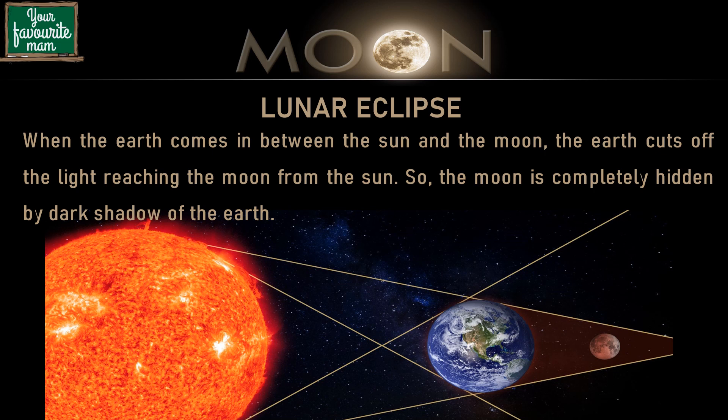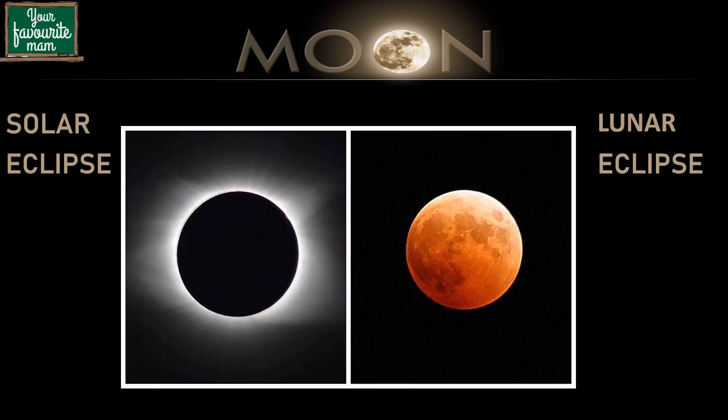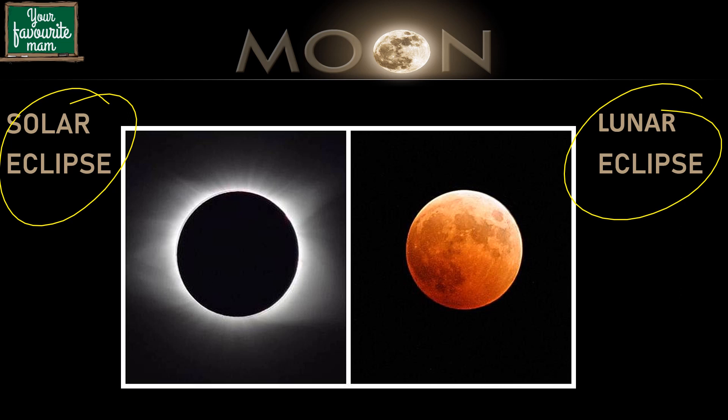Similarly, when the earth comes in between the sun and the moon, the earth cuts off the light reaching the moon from the sun, and the moon is completely hidden by the dark shadow of the earth — this is known as the lunar eclipse. This is how a solar eclipse and a lunar eclipse look. We should never directly look at the sun during a solar eclipse even for a second, because it will damage your eyesight forever.